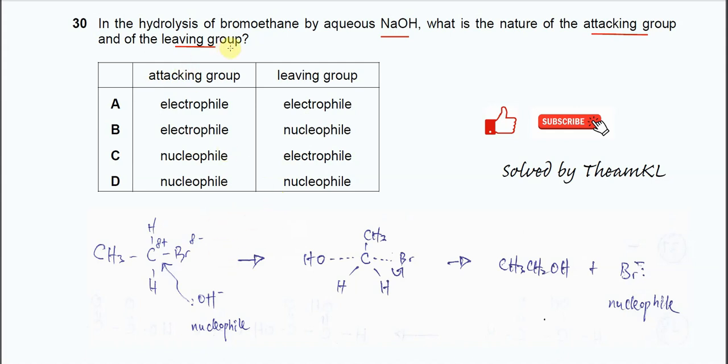Because this bromoethane is the primary halogenoalkane, it will undergo SN2 mechanism. This partial positive carbon will be attacked by hydroxide. Hydroxide is an electron rich species.